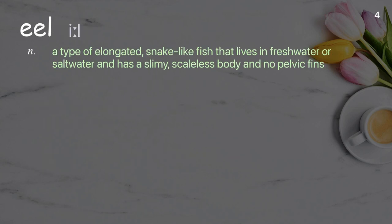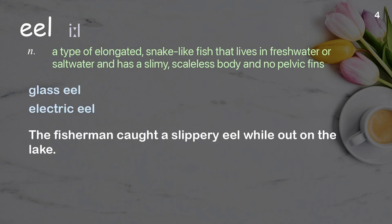Eel: A type of elongated, snake-like fish that lives in freshwater or saltwater and has a slimy, scaleless body and no pelvic fins. Examples: Glass eel, electric eel. The fisherman caught a slippery eel while out on the lake.